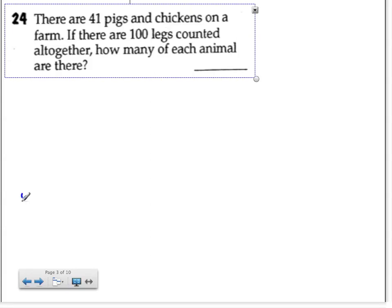Okay, here we are with the podcast, going to look at this scenario here with 41 pigs and chickens on a farm. If there are 100 legs counted altogether, how many of each animal are there?